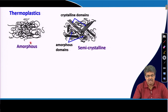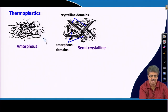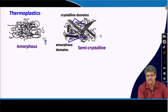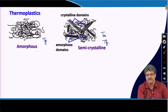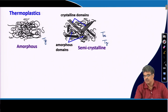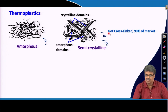Thermoplastics are of two types: amorphous, or semi-crystalline polymers which contain both crystalline and amorphous regions. Amorphous polymers are characterized by a glass transition temperature (Tg), while semi-crystalline materials are characterized by two temperatures: the melting point (Tm) related to the crystalline domain, and the glass transition temperature (Tg) related to the amorphous domains. About 90% of the polymer market consists of thermoplastic materials.